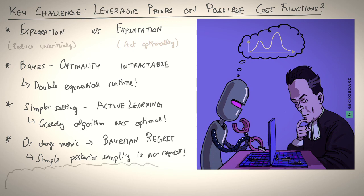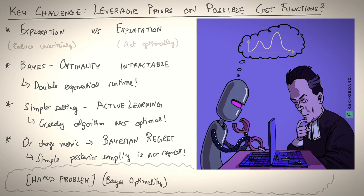Finally, we saw that a way to make progress is to look at a simpler setting, that of active learning, where greedy algorithms are near optimal. Or one can change the metric and look at Bayesian regret, and a simple posterior sampling enjoys no regret property. So on a parting note, we leave you once again with the recurring observation of this series that whenever we have a hard problem, in this case, Bayes' optimality, we should check if we can turn it into an easier problem, for example, solving a game. And it is on this very insight that we will lay the foundations of a unified framework for solving imitation learning in our upcoming lectures. But until then, be well everyone.